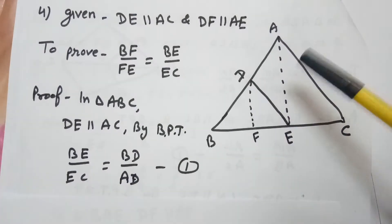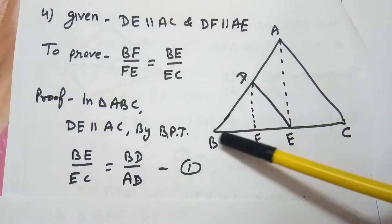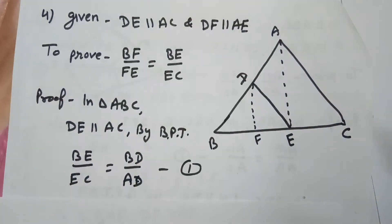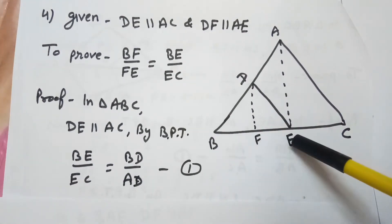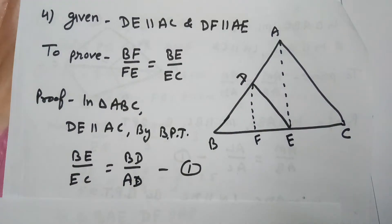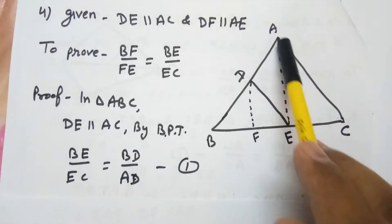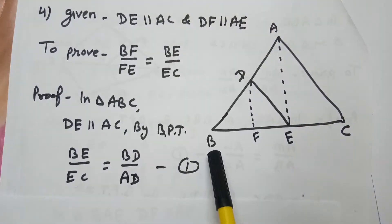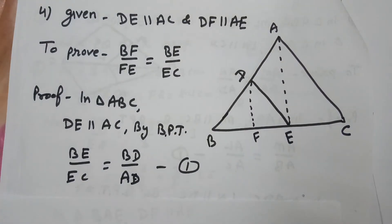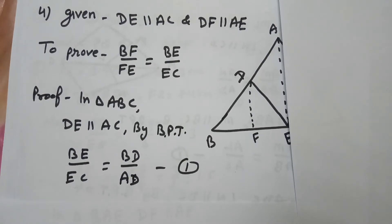We will use the BPT (Basic Proportionality Theorem) in triangle ABC. Since DE is parallel to AC, by BPT we get: BE over EC equals BD over AD. This is equation one.